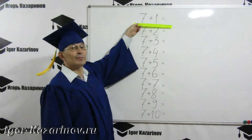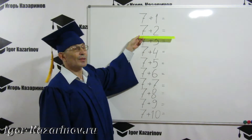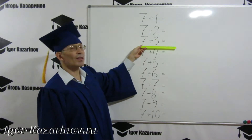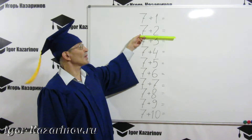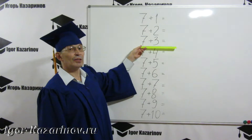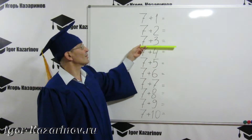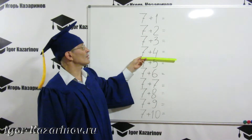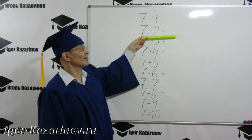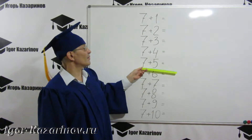7 plus 1 equals 8. 7 plus 2 equals 9. 7 plus 3 equals 10. 7 plus 4 equals 11. 7 plus 5, 12.